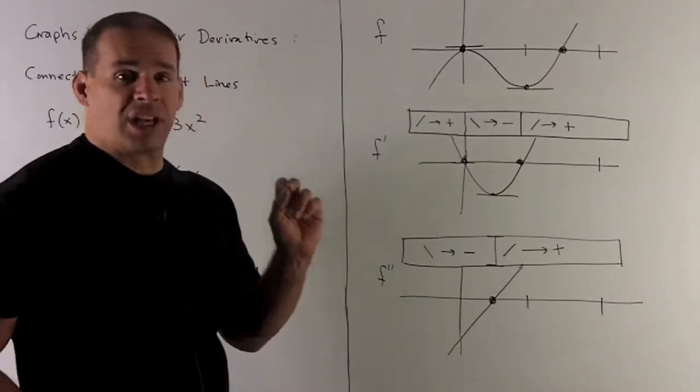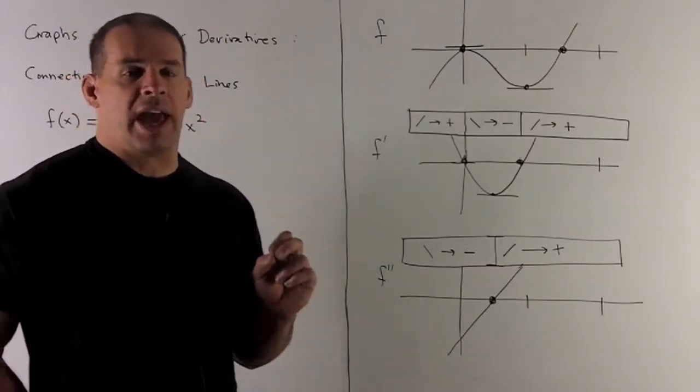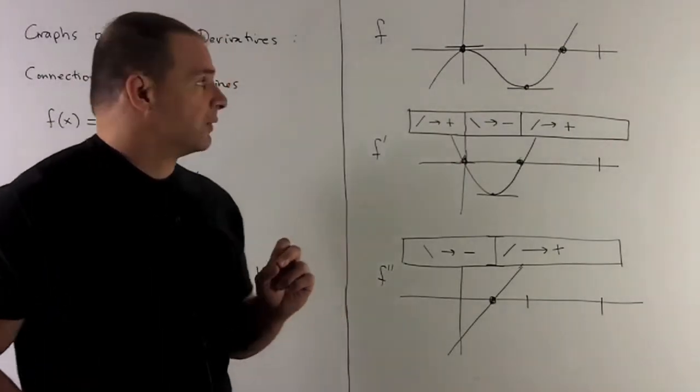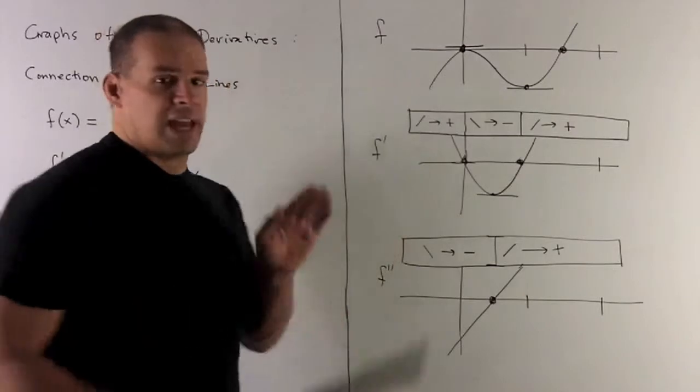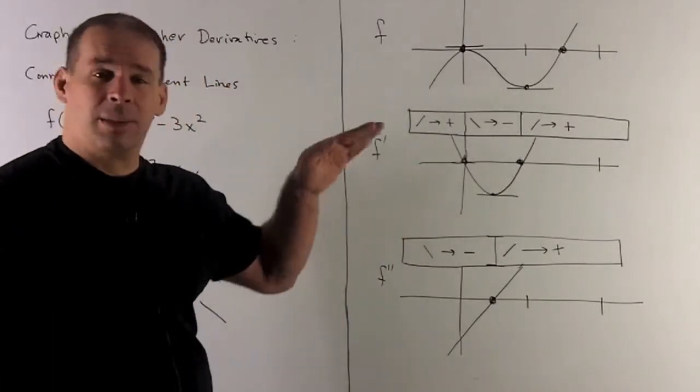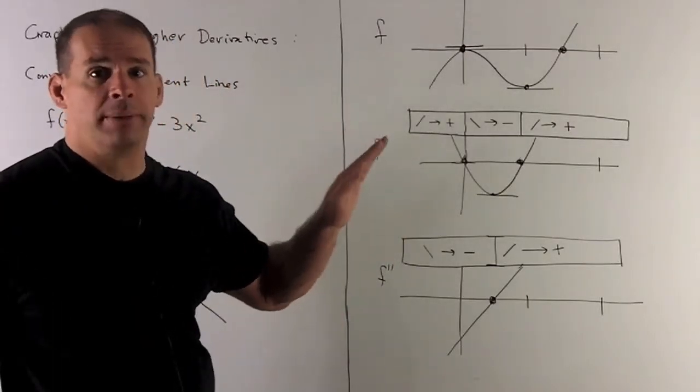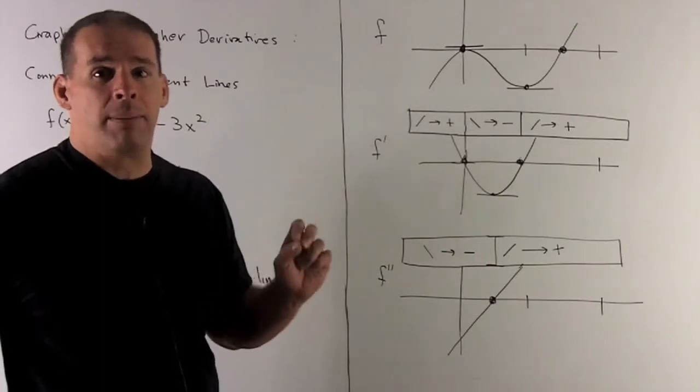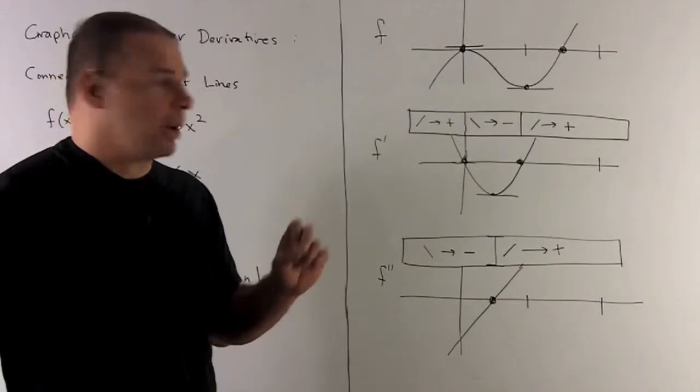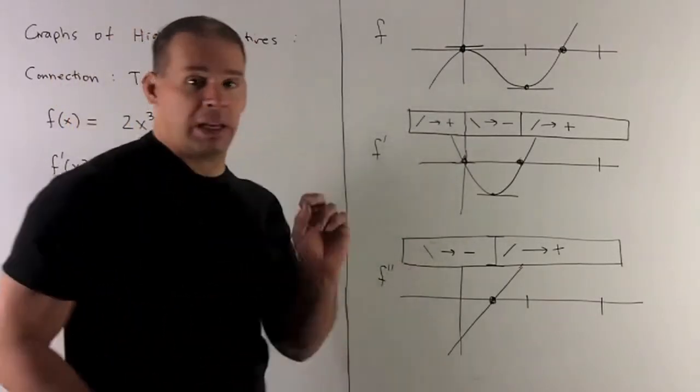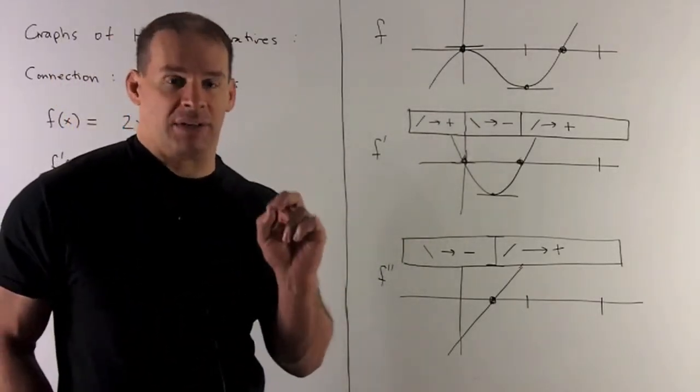Now, what else can I take a look at? Let's take a look at the tangent lines and their slope. So if you notice, in the region going up to 0, the tangent lines are always going to be like this, meaning they always have positive slope. When I go to f prime, that's just going to mean that when I'm on this region, my function is going to have values that are above the x-axis, just meaning the functions have positive values.